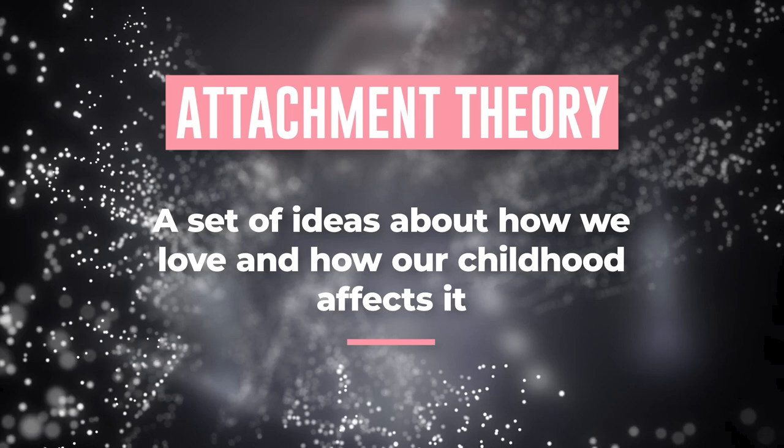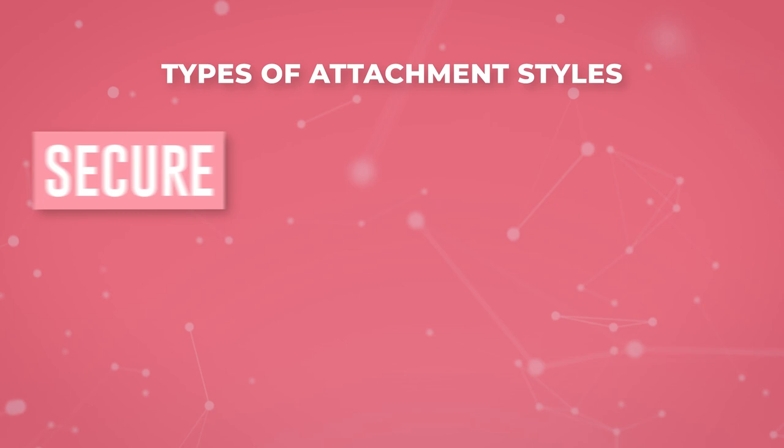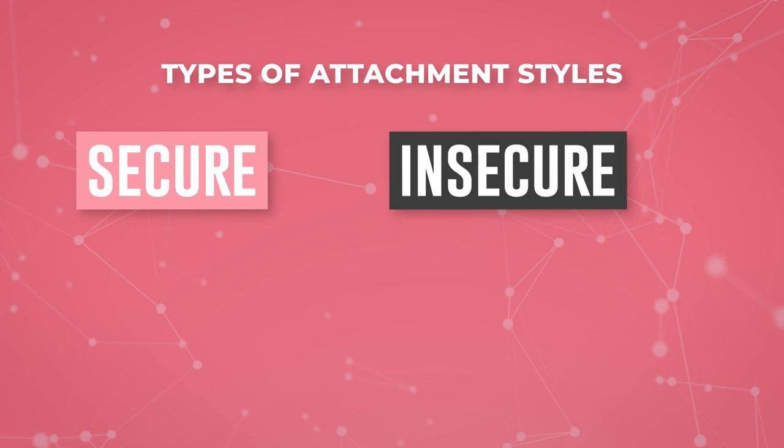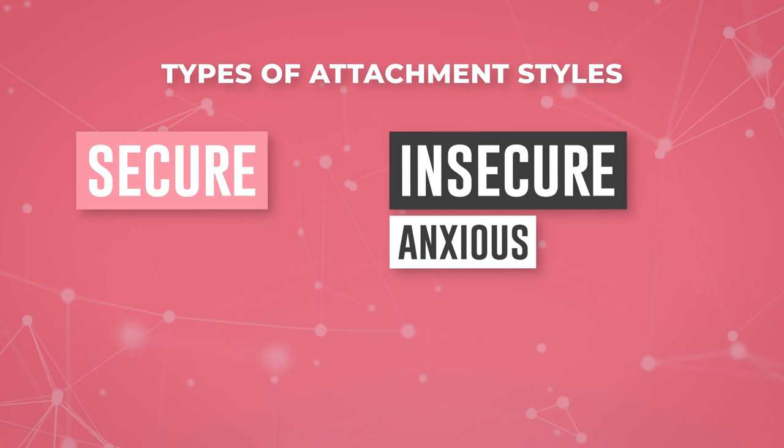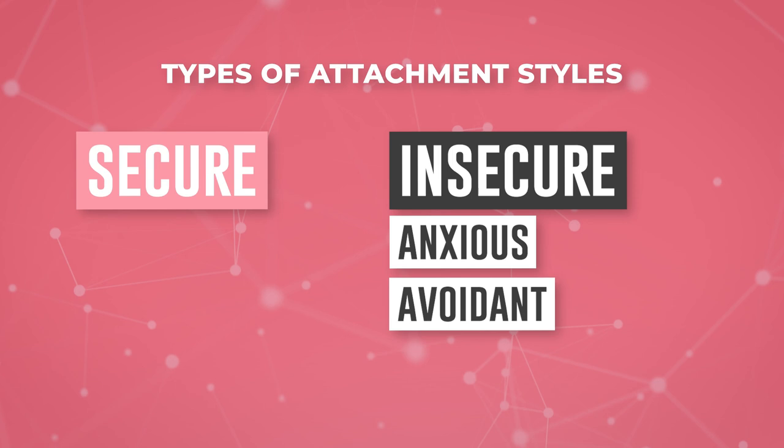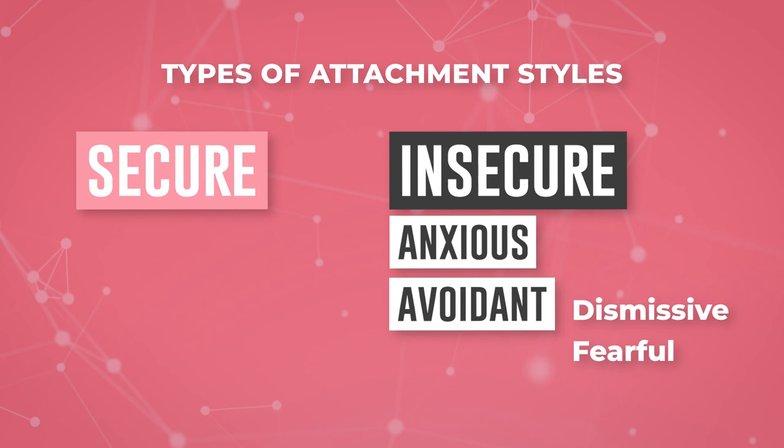Let's start by defining what the anxious and avoidant attachment styles are. Attachment theory is a set of ideas about how we love and how our childhood affects it, created by John Bowlby in the 50s and 60s. He really argued that there are two types of attachment styles: the secure attachment styles and the insecure attachment styles. There are three distinct insecure attachment styles. You often have the anxious attachment style, the avoidant attachment style, and the fearful attachment style — all insecure ones.